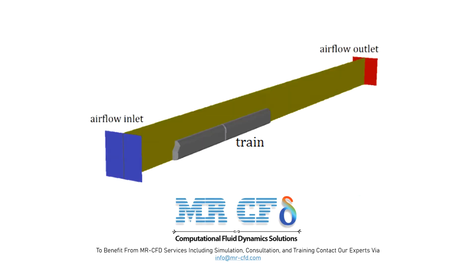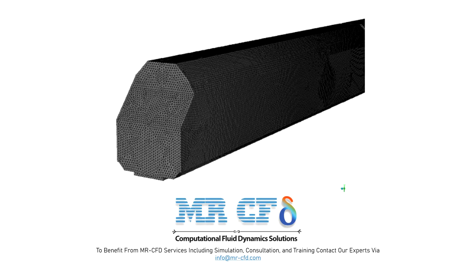The geometry of this project consists of a model train and a fluid domain. The geometry is designed in Gambit software and is also meshed in Gambit software. The mesh type used for this geometry is structured and the element number is equal to 1,013,277.